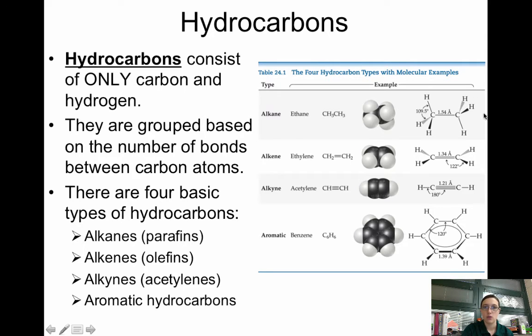There are alkanes, which are all single bonds. There are alkenes, which has a double bond. There are alkynes, which has a triple bond. And then there are hydrocarbons that are called aromatic. And aromatic hydrocarbons are simply in a ring shape. It could have six, it could have three. But aromatic hydrocarbons are simply in a ring.